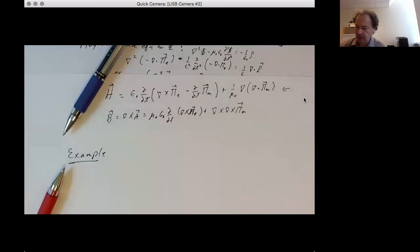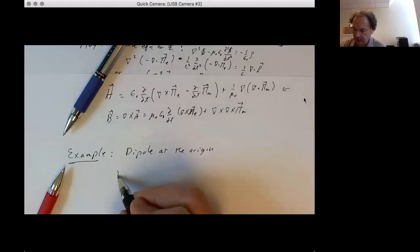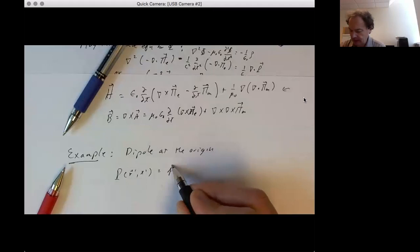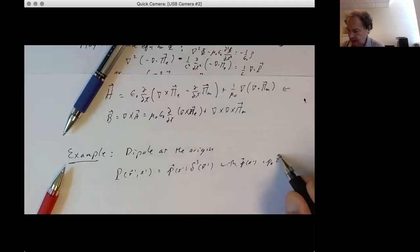Okay, so let's do an example and then we'll be finished. An example would be a dipole at the origin. So polarization per unit volume R prime t prime is equal to P of t prime delta of R prime, where the polarization is P naught z hat e to the minus i omega t prime. T prime is of course the retarded time t minus r over c, in the z hat direction.